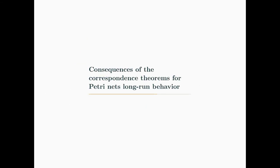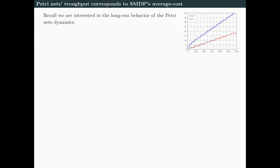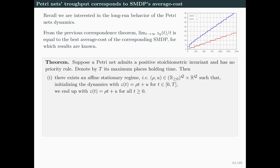Let us see consequences of these correspondence theorems. Recall we are interested in the long-run behavior of the Petri net dynamics, for instance the asymptotic growth of transition counter variables. What you can see from the simulation is that after a long time, the v functions look like affine functions. Thanks to the correspondence theorem, we know the limit ZQ(t)/t equals the best average cost of the corresponding SMDP. Because results are known for it, we can state our main theorem. Suppose the Petri net admits a positive stoichiometric invariant and has no priority rule. Then there exists an affine stationary regime, meaning there are two vectors ρ and u such that if we initialize the dynamics with ρt + u, this dynamics propagates forever.